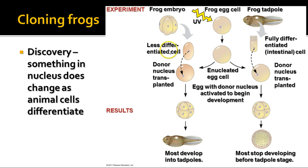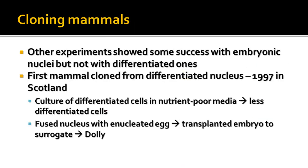A really undifferentiated cell from an early embryo worked great, but a fully differentiated cell — let's say an intestinal cell — didn't usually work. Most of the time it stopped developing before it got to the tadpole stage. What they found by doing these experiments is that something in the nucleus changes as animal cells differentiate, and there's something that makes it more difficult for them to produce an organism from an embryo. There were other experiments that showed some success with embryonic nuclei, but again not with differentiated ones, and they continued to work on this for a number of years.